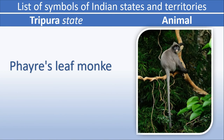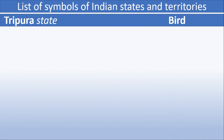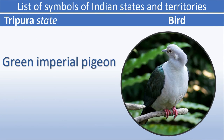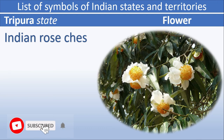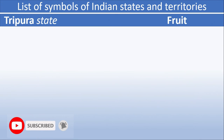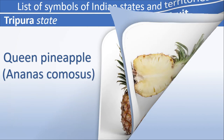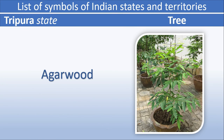Tripura animal: Phayre's Leaf Monkey. Tripura bird: Green Imperial Pigeon. Tripura flower: Indian Rose Chestnut. Tripura fruit: Queen Pineapple. Tripura tree: Agarwood.